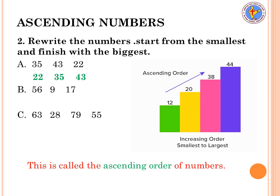For the next set of numbers — 63, 28, 55, and 79 — 28 is the smallest, next is 55, then 63, then 79. So the answer is 28, 55, 63, 79. You write them in order from smaller to biggest. You can also see the picture showing how numbers increase from smallest to largest. This is called ascending order of numbers.